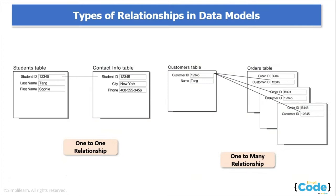Consider the example of a one-to-one relationship: a student table and a contact info table, where for each student ID there is a unique contact info — one value pointing to another. For one-to-many, consider a customer table and an orders table. Every customer has a different ID, and a customer can place multiple orders generating multiple order IDs such as B204, B391, and B448 — one entity pointed to three other values. Let us know in the comments what would be a good example of a many-to-many relationship.